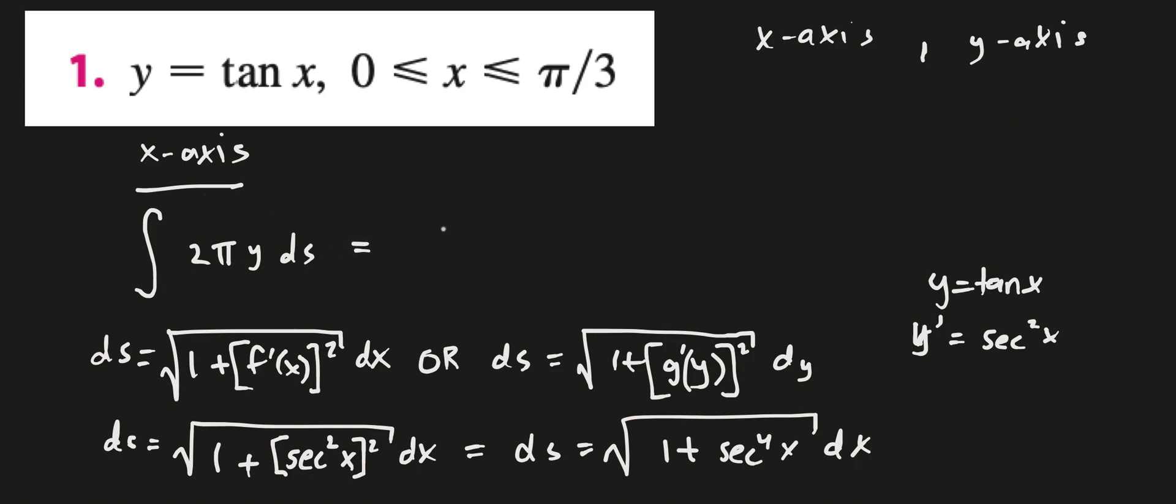So this is equal to integral 2πy. We want everything in terms of x, so we'll just write this as tangent x. Let's write 2π times tangent x times then ds. We have all of this business for ds. So that's the integral 1 plus secant to the fourth x dx. And we of course need to specify the bounds of integration. We are in the x world, so this is from 0 to π/3.